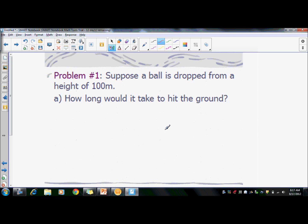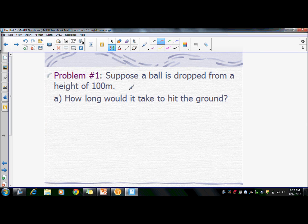Now let's try some practice problems using this. Suppose a ball is dropped from a height of 100 meters. How long would it take to hit the ground? Just like we did before, we're going to use the guess system. So what are our givens? We have a height of 100 meters. That's our D.